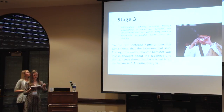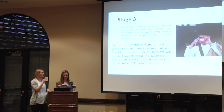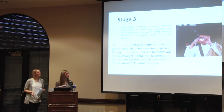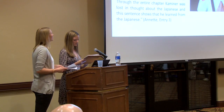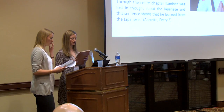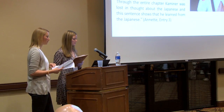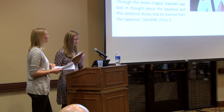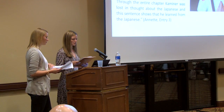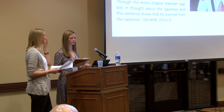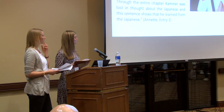Stage three marks intermediate learning progress through establishing a general connection between the visualization and the written entry about a meaningful event from the chapter. For Annette, this was an intertextual reference Kaminer makes about Japanese tourists in Berlin. She wrote that Kaminer sees Japanese tourists in the small southern town of Rothenburg and is reminded of a statement from Berlin, noting that throughout the entire chapter Kaminer was lost in thought about the Japanese, and his final sentence shows he had learned from them. Annette posted a picture of a Japanese tourist — showing a semi-direct connection — though 'Japaner' was also the keyword in the title.